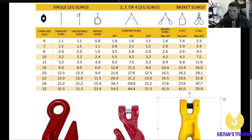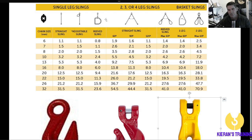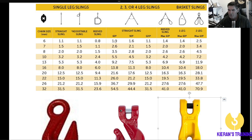Now we've got a single leg reaved sling. Sticking with our 10mm chains — if it's a single leg and reaved, you'll see that little D shape in the diagram, which means it applies to both a square load and a round load. So square or round, you're good for 2.4 tonne on a single leg. Now we've got the straight sling with different angles: 60 degrees, 90 degrees, and 120 degrees. For a 10mm chain at 60 degrees you're good for 5.5 tonne, at 90 degrees it's 4.5 tonne, and at 120 degrees it's 3.2 tonne.